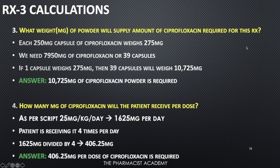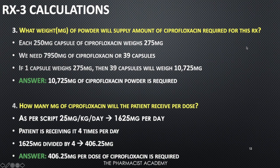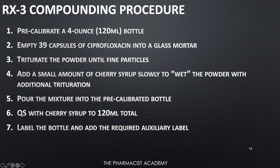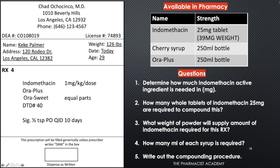What weight in milligrams of powder will supply the ciprofloxacin required? Each 250 mg capsule weighs 275 mg. We need 39 capsules, so 39 × 275 mg = 10,725 mg of powder. How many milligrams will the patient receive per dose? The patient takes 1,625 mg/day four times a day, so 1,625 ÷ 4 = 406.25 milligrams per dose.